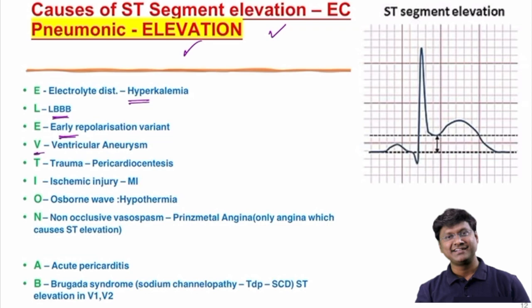V stands for ventricular aneurysm. T stands for trauma to the heart, such as in pericardiocentesis. I stands for myocardial ischemia — that is, ischemic injury and myocardial infarction.